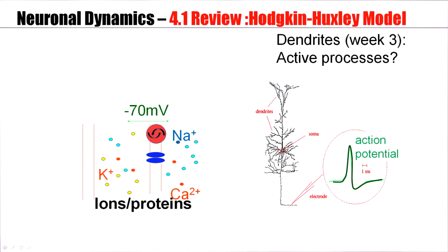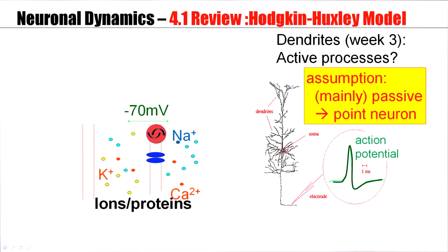Now, these active processes exist. The question arises whether these and other neurons would show such active ping pong-like processing in an in vivo situation. If the neuron is embedded in a real brain, involved in a real processing task — sensory processing, memory retrieval — are these active processes important? We don't really know. Other neurons might not have these active processes at all.